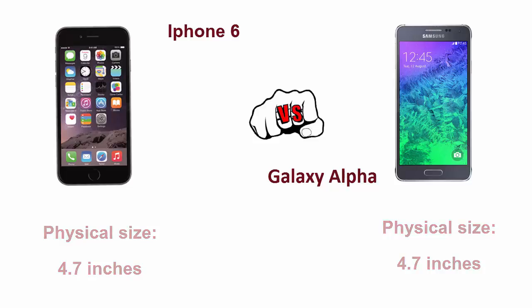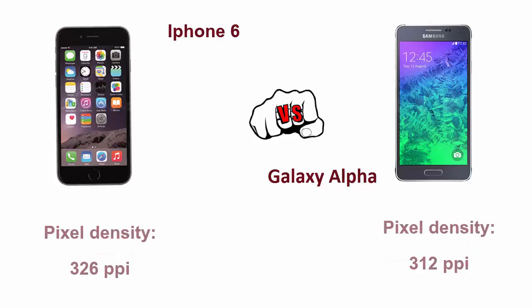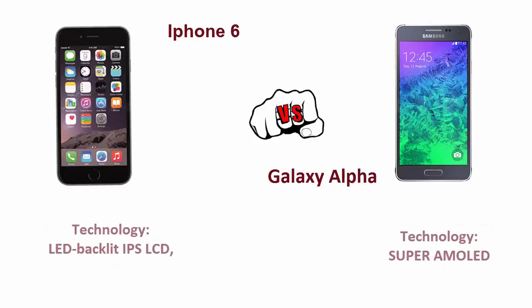The iPhone 6 has a resolution of 750 by 1334 pixels whereas the Galaxy Alpha has 720 by 1280 pixel resolution. The iPhone 6 has a pixel density of 326 PPI and the Galaxy Alpha has 314 PPI. The screen technology in the iPhone 6 is IPS LCD whereas the Galaxy Alpha has a Super AMOLED screen.